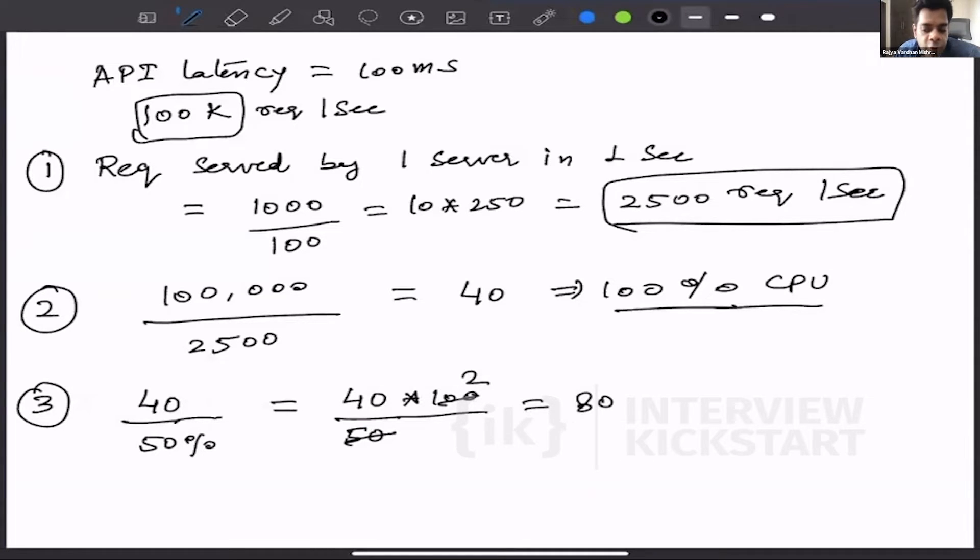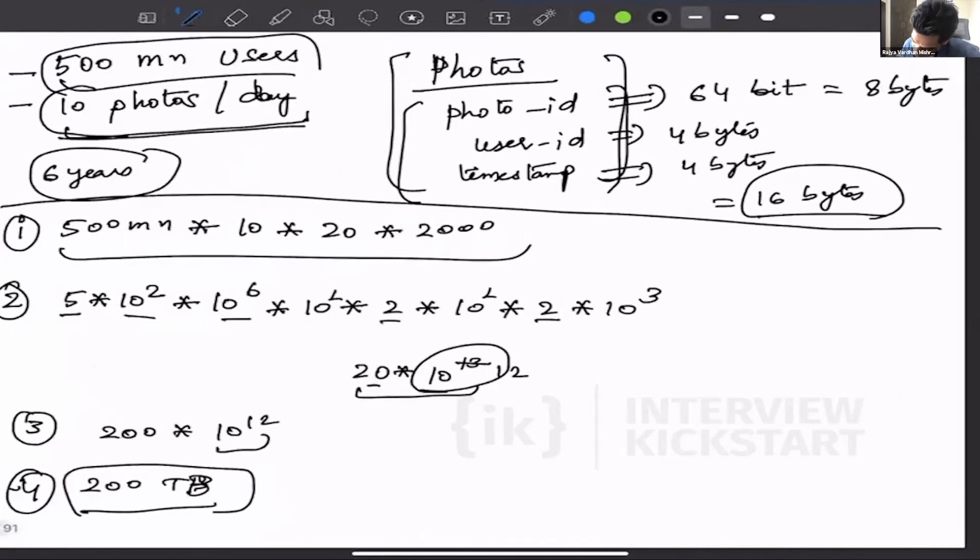When we are talking about latency, it's in milliseconds. When we are talking about data requirements, the granularity is bytes. That is why we are dividing it by 50%. There was a question: why don't we multiply it? If I multiply 40 with 50%, it becomes 20, so that's why we are dividing it.